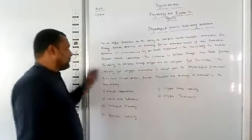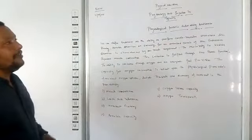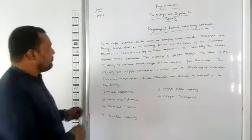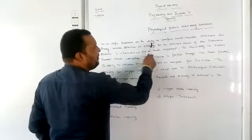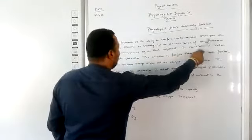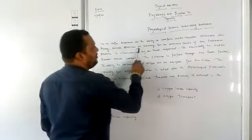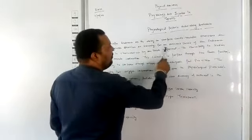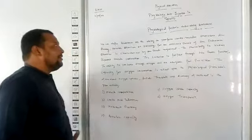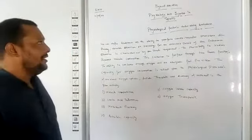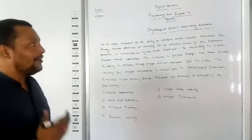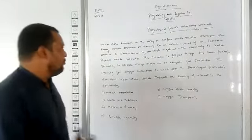First of all, a brief introduction regarding endurance. We can define endurance as the ability to perform cardiovascular exercises like running, aerobic exercises, or swimming for an extended period of time. The basic meaning of endurance is resistance against the activity for a longer duration.